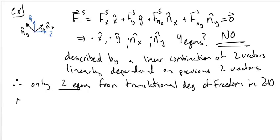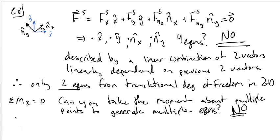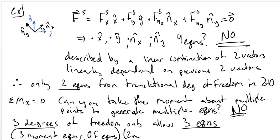Remember we had an additional equation — the sum of the moments in Z equals zero. Can we sum moments about multiple points to generate multiple equations? The answer again is no. You can have no more equations than you have degrees of freedom. You are free, however, to choose which three equations you want to use.